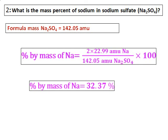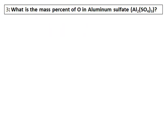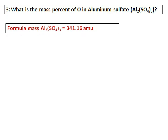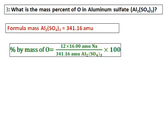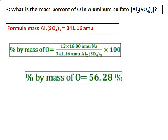What is the mass percent of oxygen in aluminum sulfate? The formula is also given. Calculate the formula mass of aluminum sulfate. For oxygen, we have four oxygen atoms inside the parenthesis and three sulfate ions, therefore the number of oxygen atoms is 4 times 3, which equals 12.